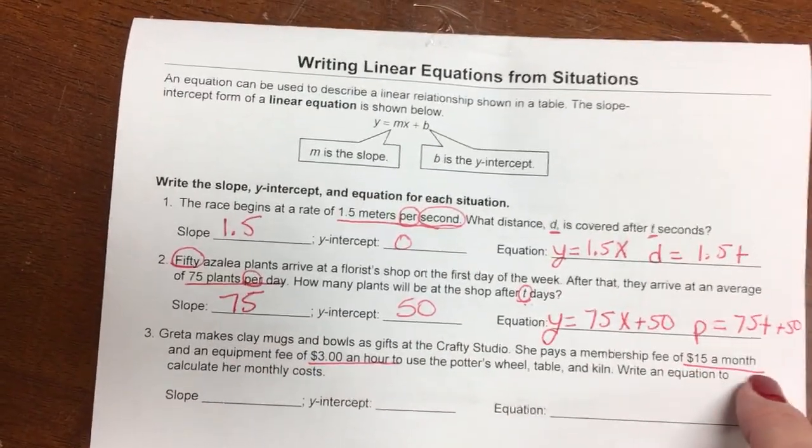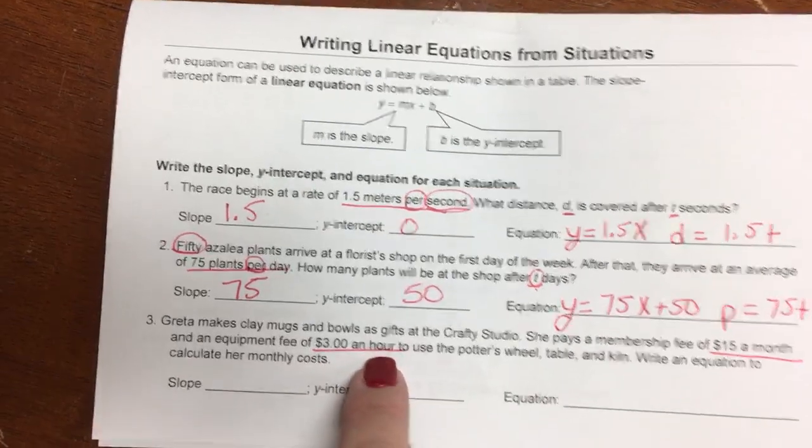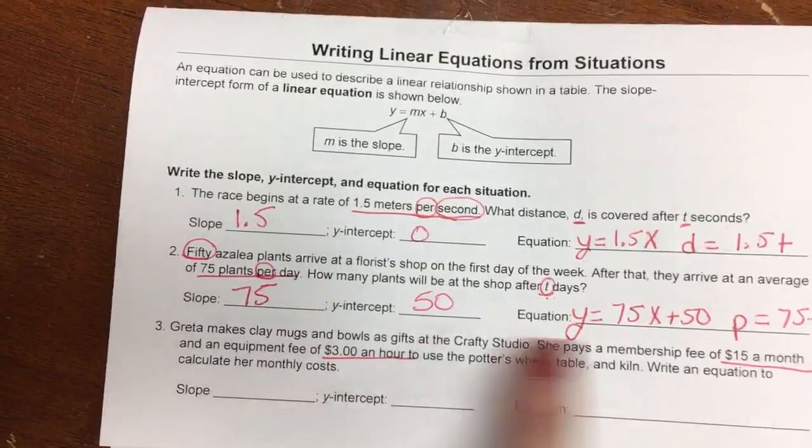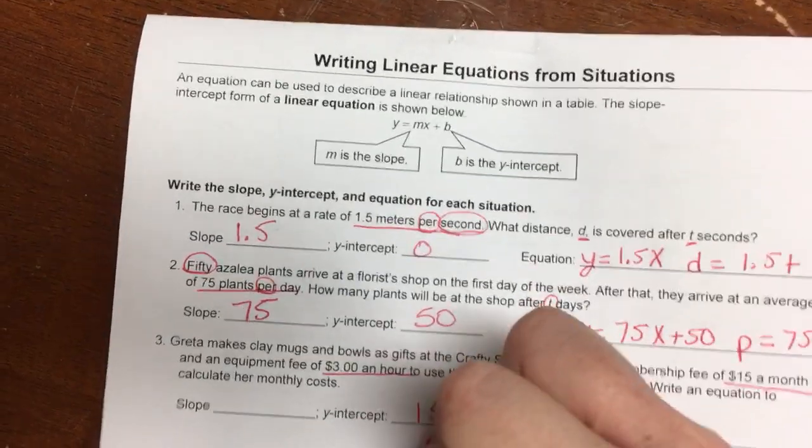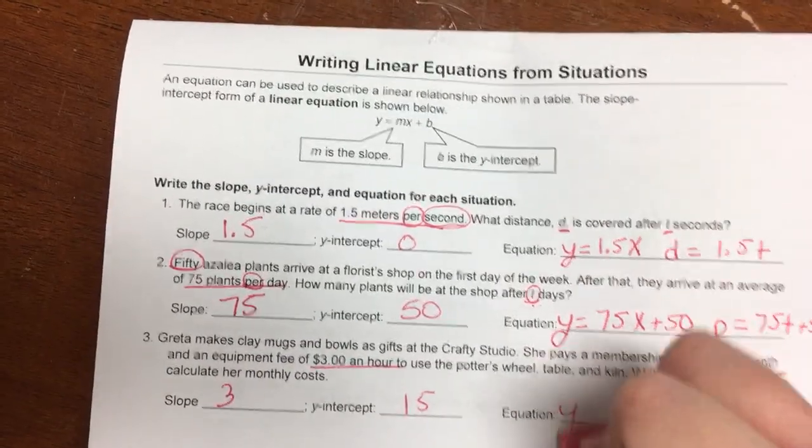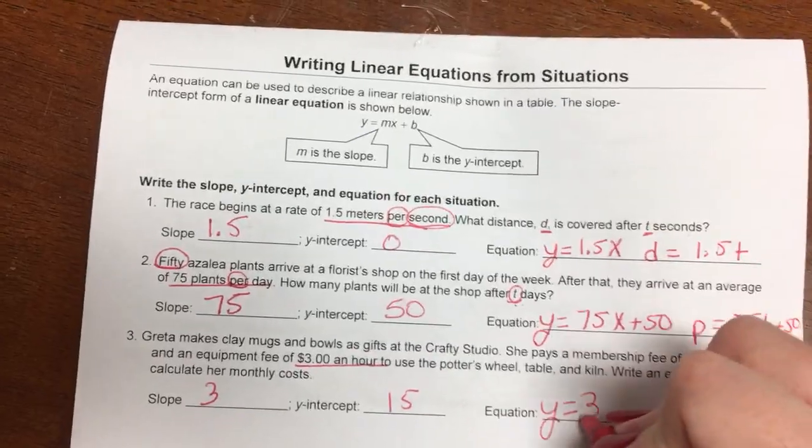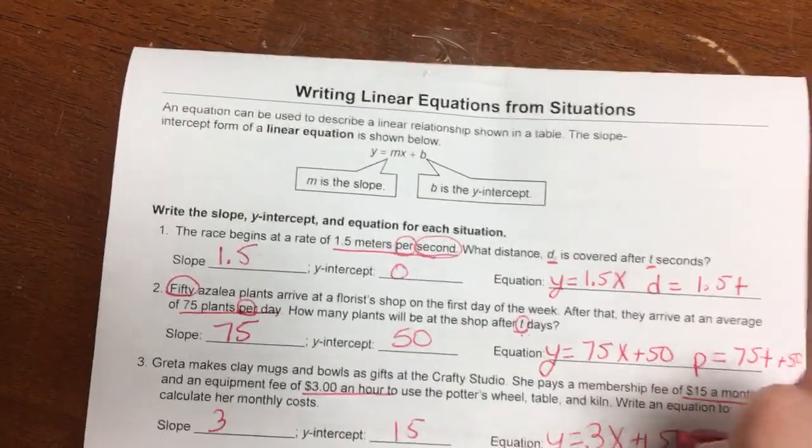So this is $15 a month and this is $3 an hour. But since we're just doing this for a month, that's going to be my y-intercept, the $15. And the $3 will be my slope. And then you just put it in, 3x plus 15.